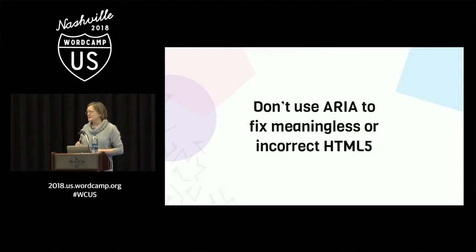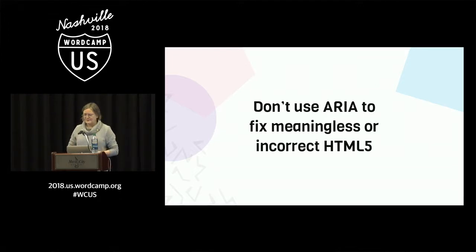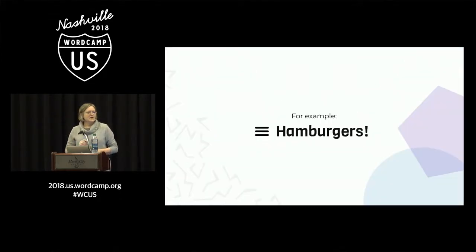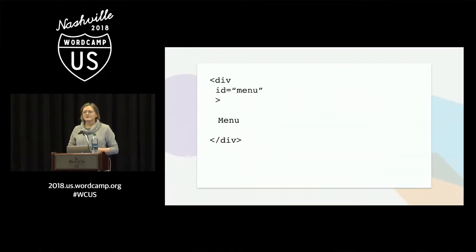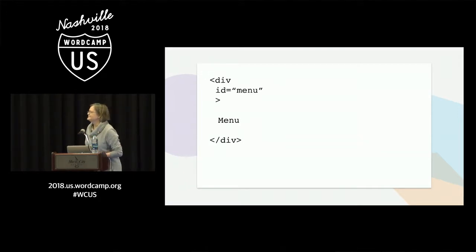Don't use ARIA to fix meaningless or incorrect HTML. If you say our accessibility is wonderful because we put ARIA on all the things, that's not the right approach. For example, hamburger menus — about 50% of developers do it this way: you have a div, you give it an ID like 'menu' to put JavaScript on, you give it a name, and div. It works for you, all the JavaScript is written, and it works with a mouse.